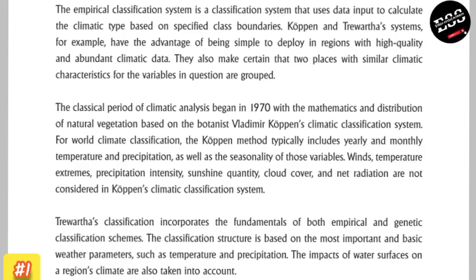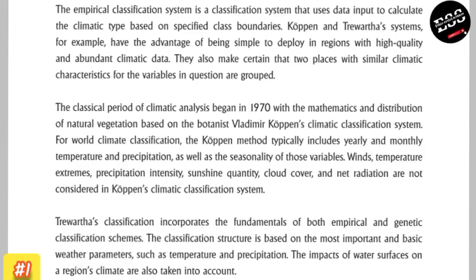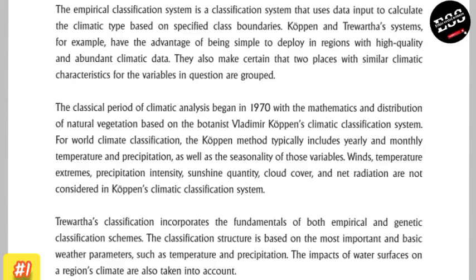The classical period of climate analysis began in 1970 with the botanist Vladimir Köppen's climate classification system, based on mathematics and distributions of natural vegetation. For world climate classification, the Köppen method typically includes yearly and monthly temperatures and precipitation, as well as the seasonality of these variables.